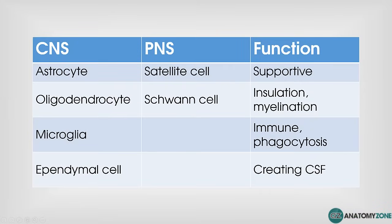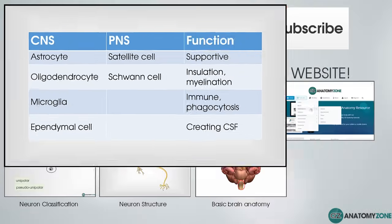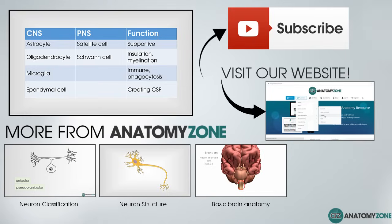That's an overview of the different glial cells found in the nervous system. To summarise: there are six glial cells — four in the central nervous system and two in the peripheral nervous system — and there is some overlap of function.